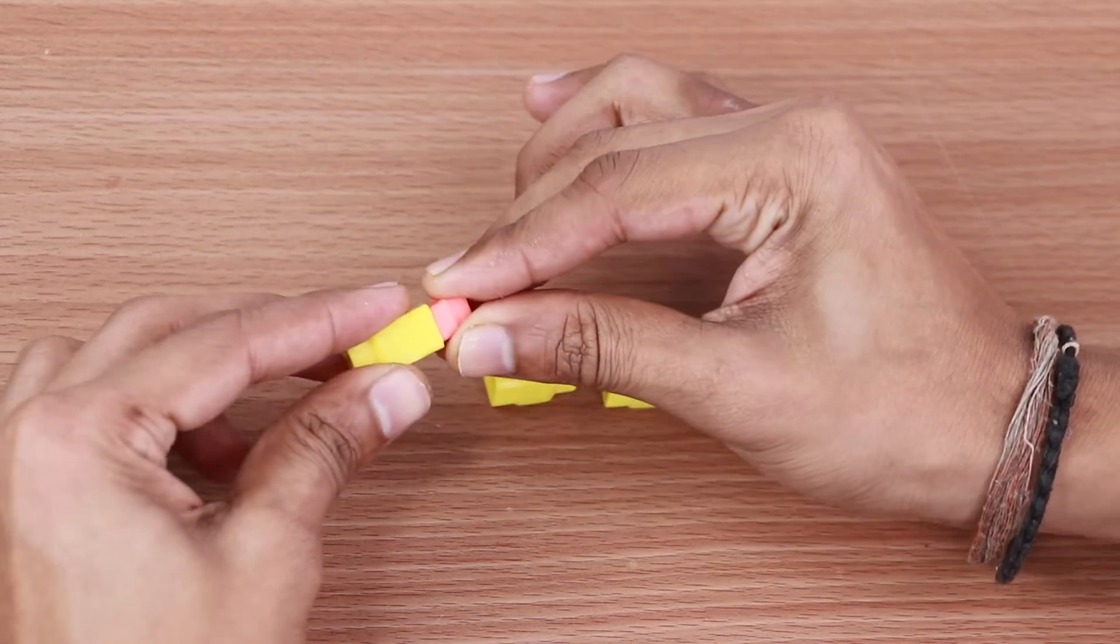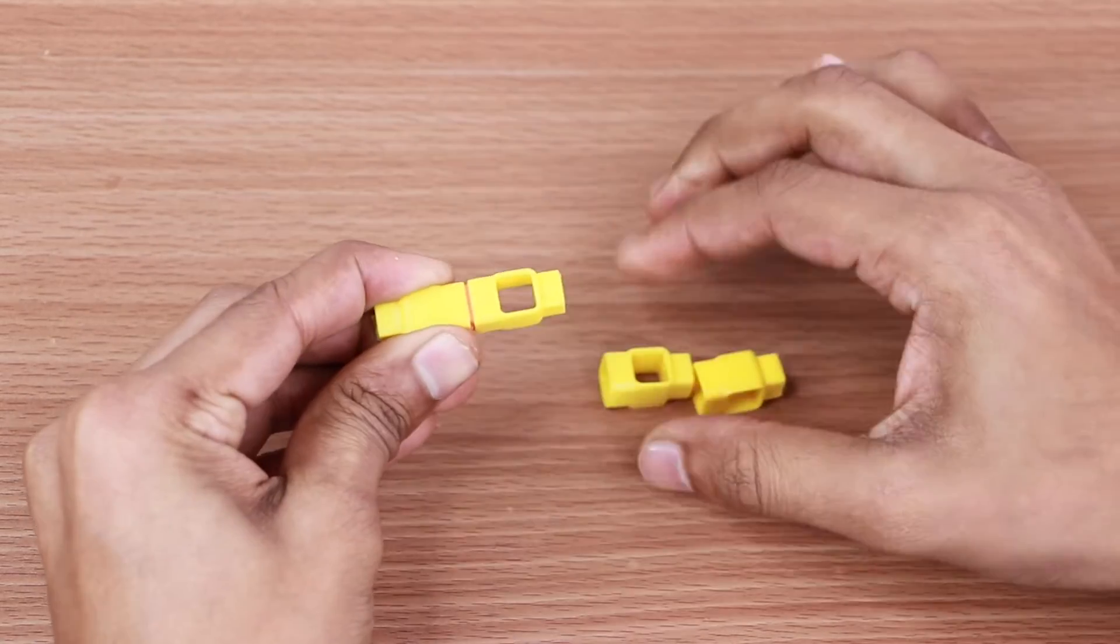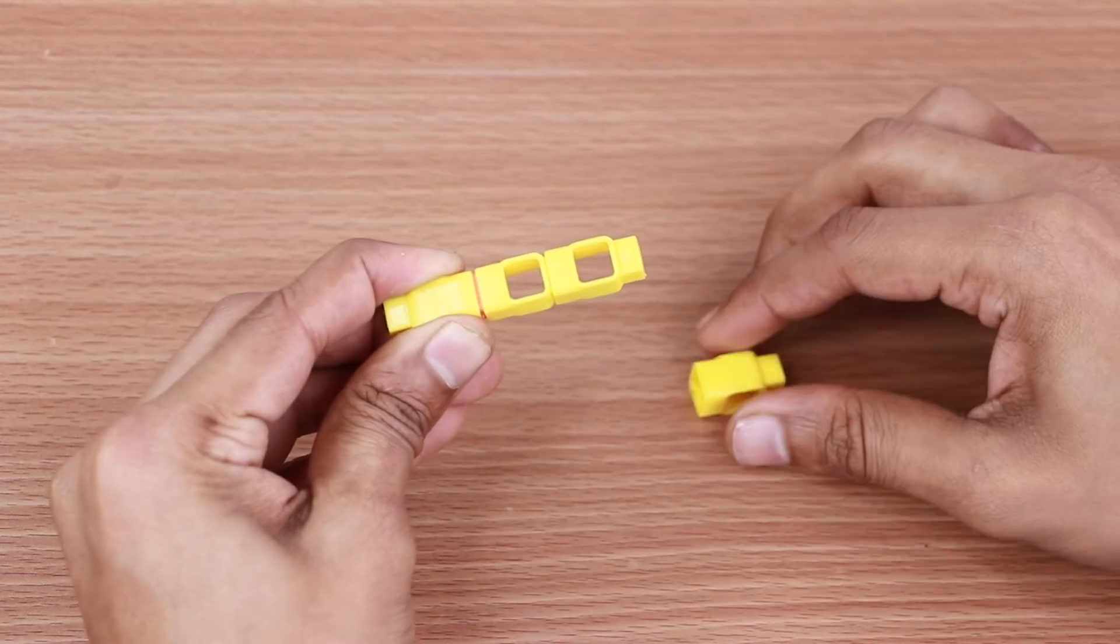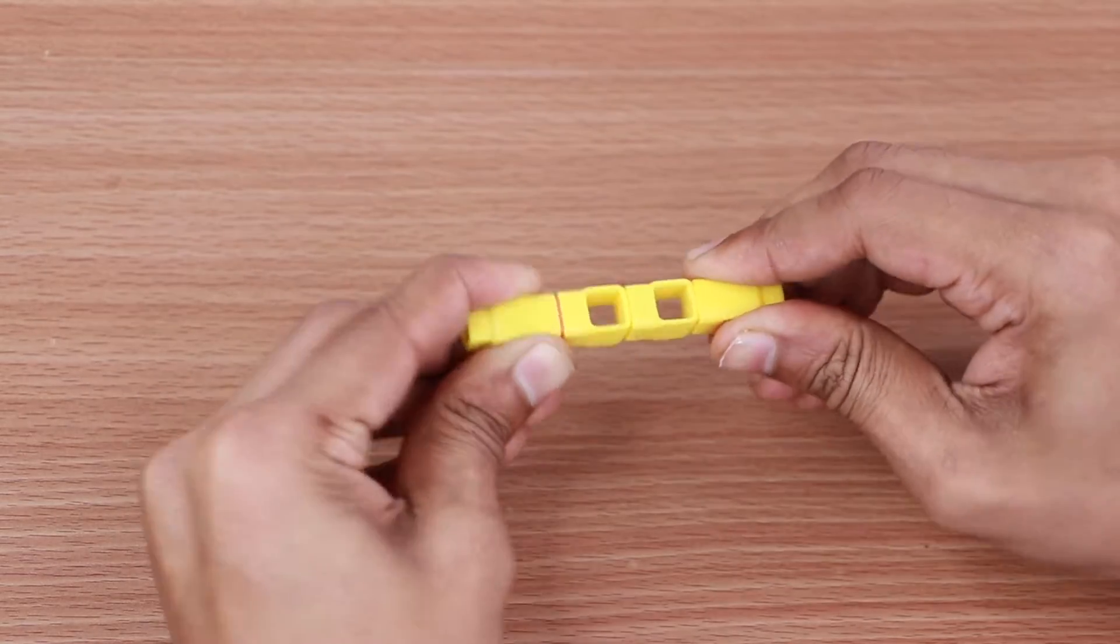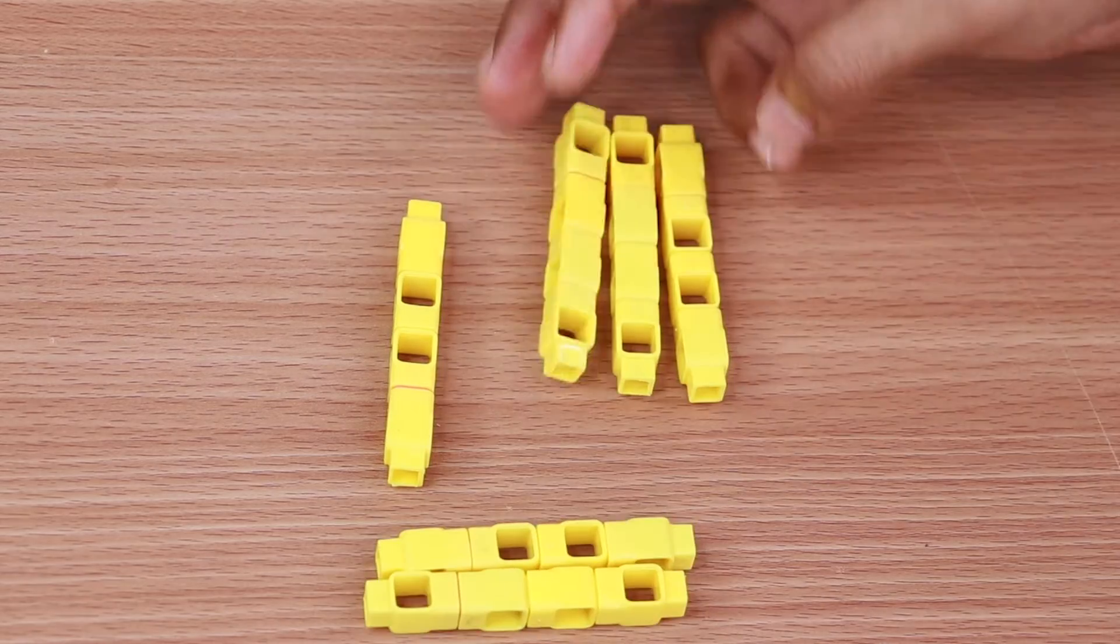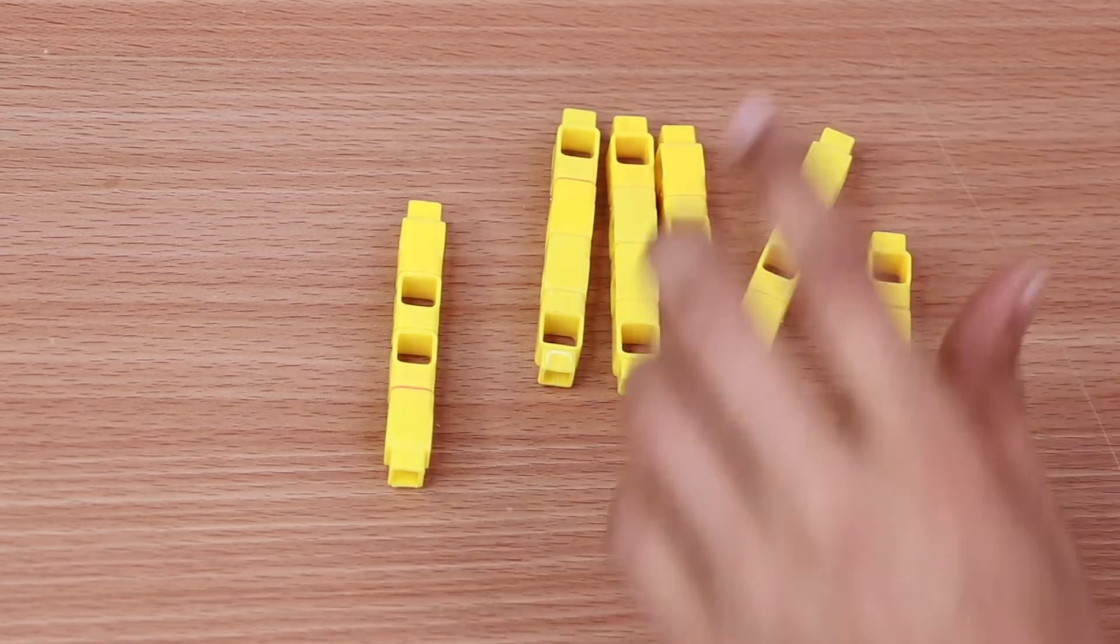Take 4 one-hole beams and one male-to-male coupler and join them together as shown. Now repeat this step to create 5 more structures like this.